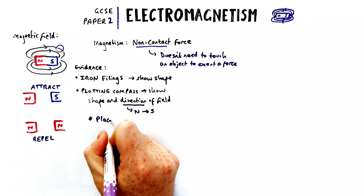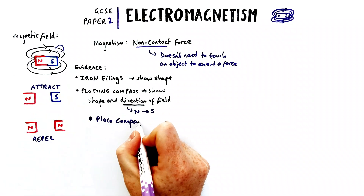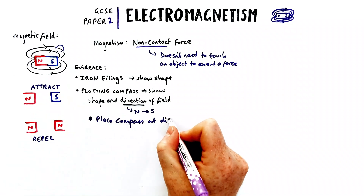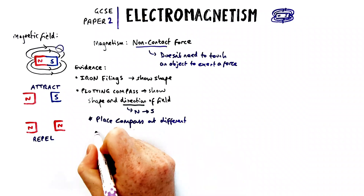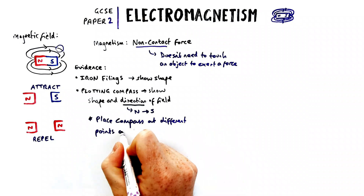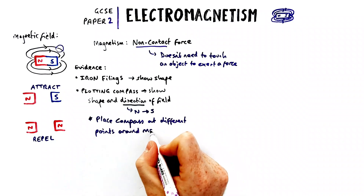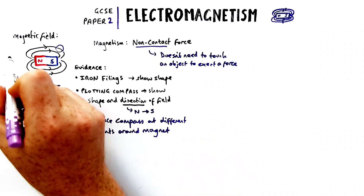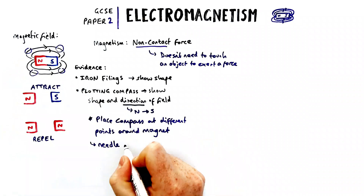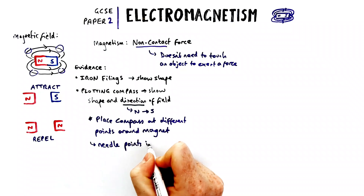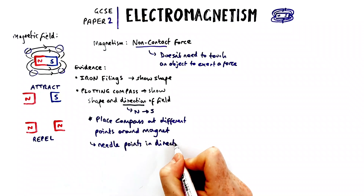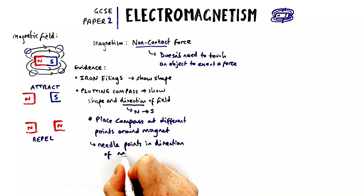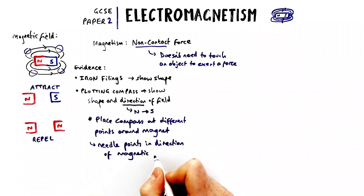So how we do that is we place the compass at different points around the magnet. When we do that, the needle will change direction and it points in the direction of the magnetic field, which is towards the south pole.